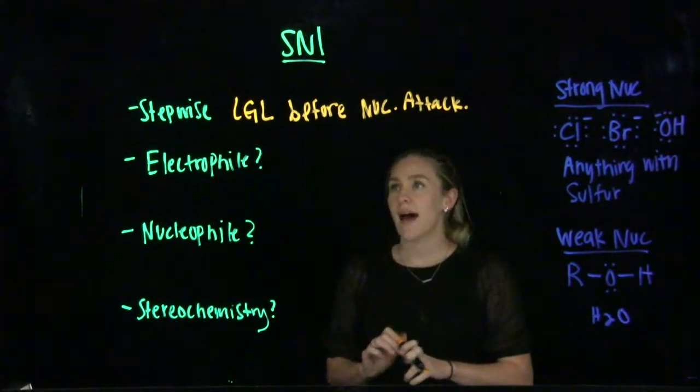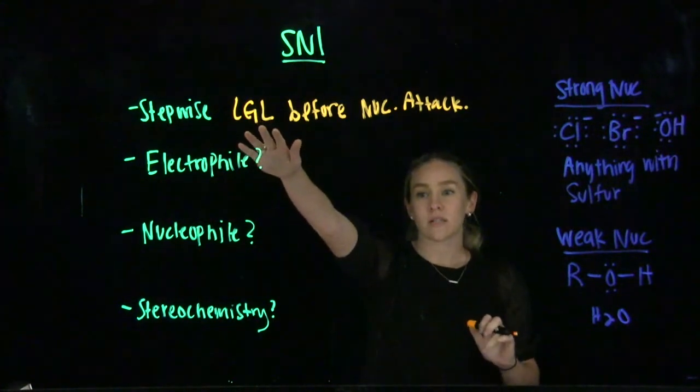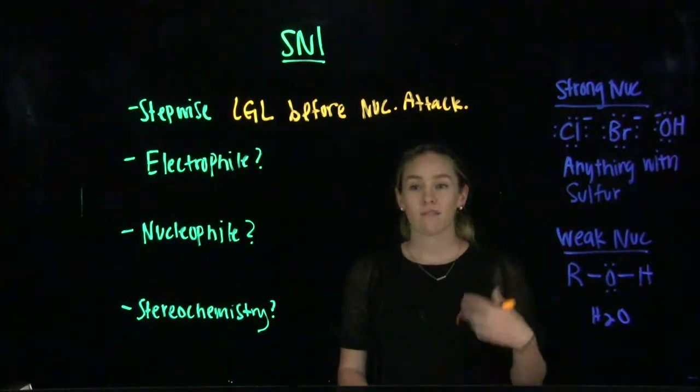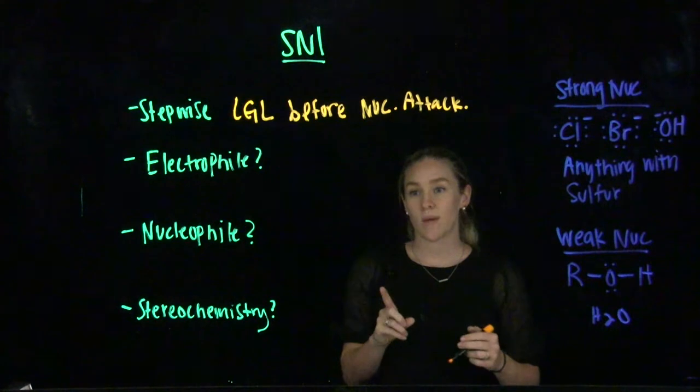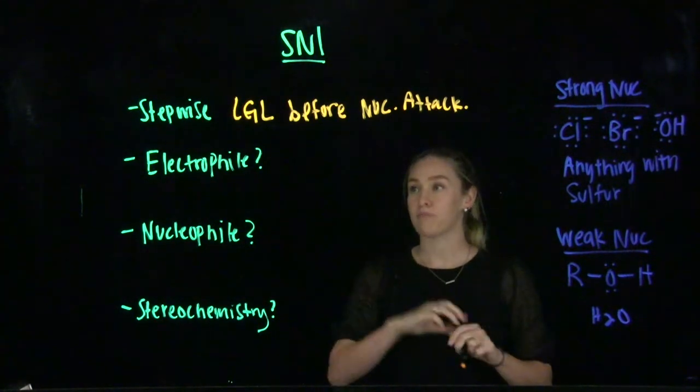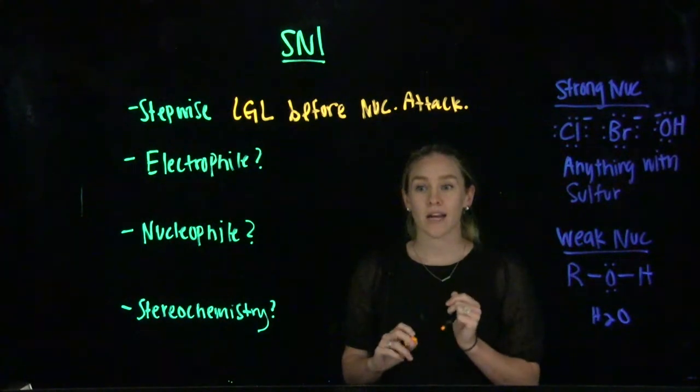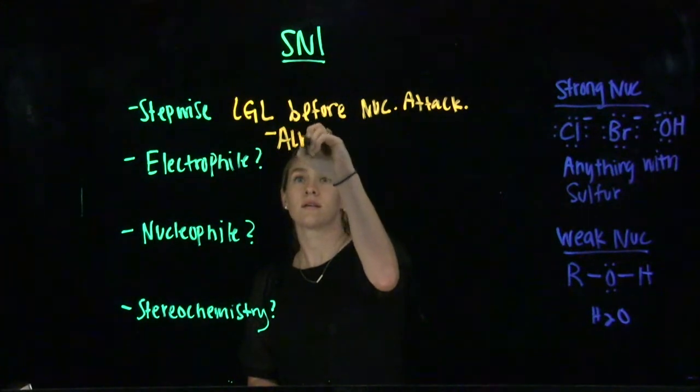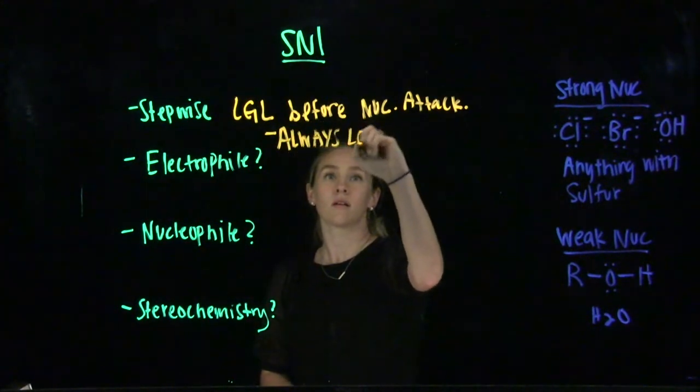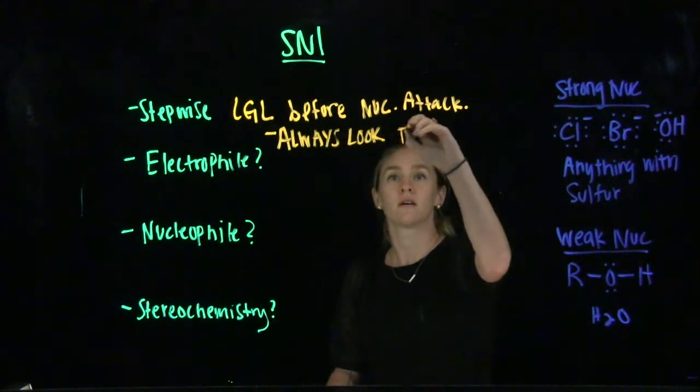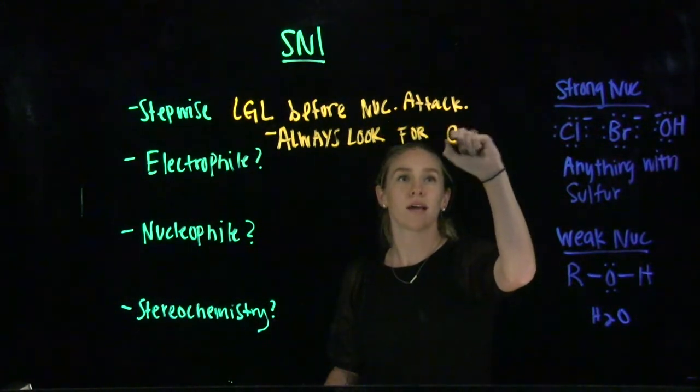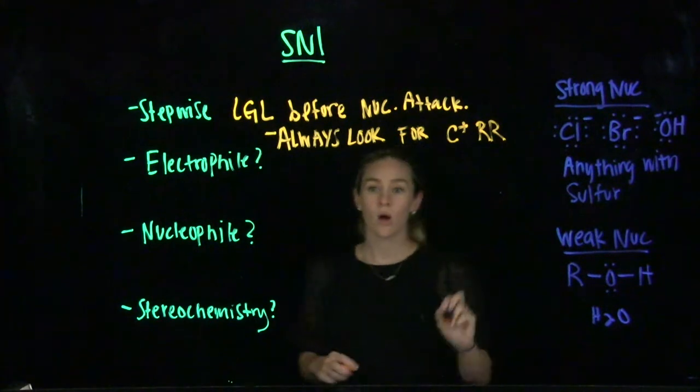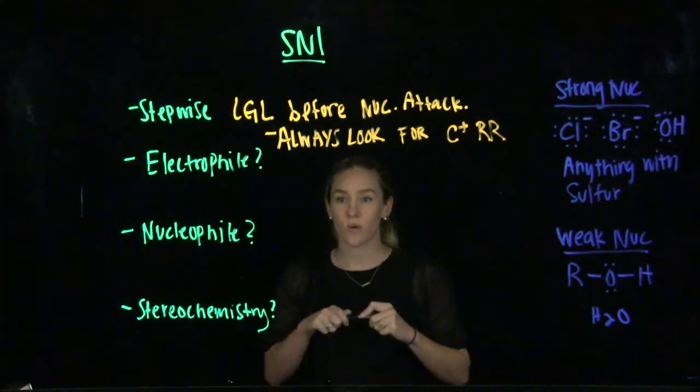What this means is that the leaving group is going to leave and that's going to leave us with a carbocation on our molecule. And because we have that carbocation, that is one thing we need to pay attention to for SN1 reactions specifically. Do we need to do a carbocation rearrangement? Always look for carbocation rearrangements in SN1 reactions.